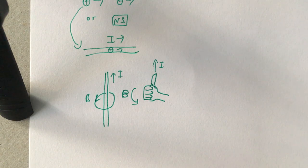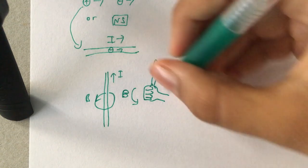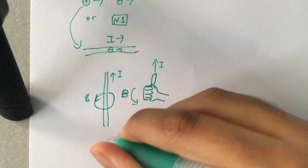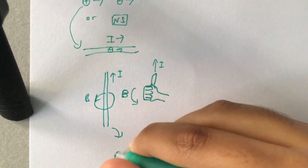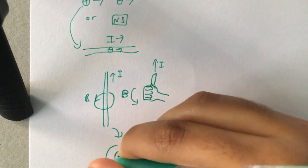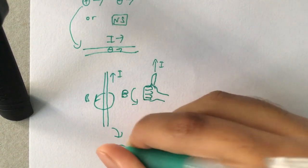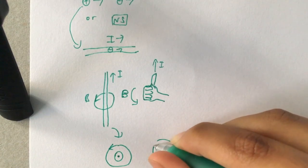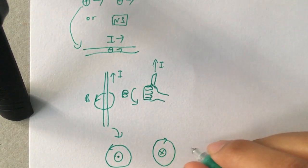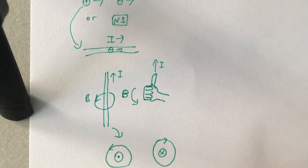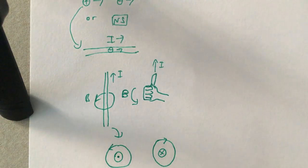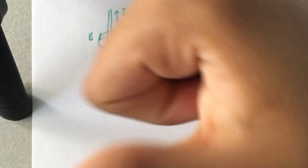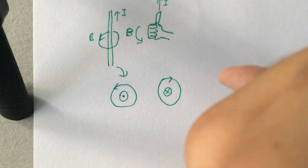If you imagine the wire from the top view, there's a way of representing the current direction: if it's a dot, you imagine it like an arrow going towards you — the current is coming out of the paper. If it's a cross, imagine it like the arrow going downwards, so the current is going into the paper. Accordingly, you can move your hand in that direction and figure out what direction the magnetic field is going.